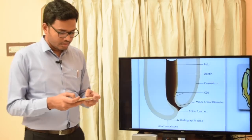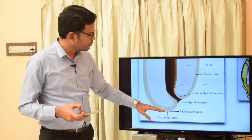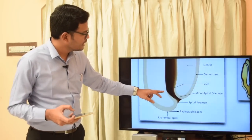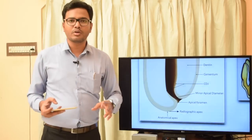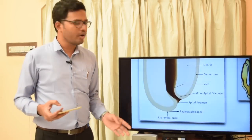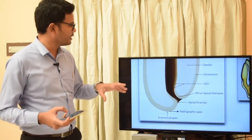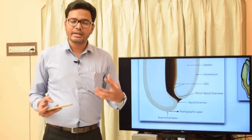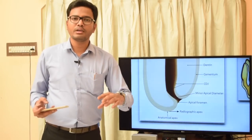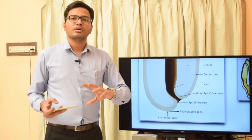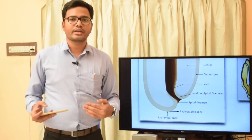The apical foramen is 0.5 to 1 mm short of the anatomic apex, and the cemento-dentinal junction is further inside the canal. Biomechanical preparation should ideally terminate at the CDJ, as most infection is confined to dentin. Since the CDJ cannot be clinically located, we use the minor constriction as a clinical guide, terminating preparation 0.5 to 1 mm short of the apex. Radiographically, both biomechanical preparation and obturation should terminate 0.5 to 1 mm short of the radiographic apex on an IOPA.